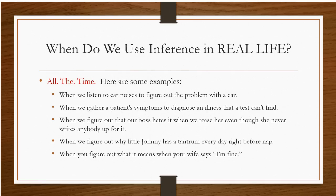When we figure out why little Johnny has a tantrum every day right before nap — Johnny may be too young to tell us what's wrong, and we have to use inference to figure out why that keeps happening every single day, and maybe jump in front of it by moving nap time up a little bit earlier. When you figure out what it means when your wife says 'I'm fine' — and this is just an old cliché — when a wife says I'm fine, there's definitely a problem, and it's up to you to use inference to figure out what 'I'm fine' really means. We use this skill all the time in real life; we're just practicing it in reading and putting a good name on it.